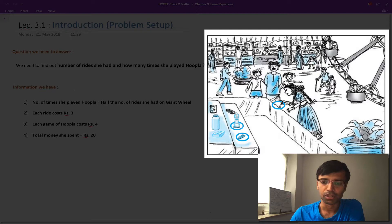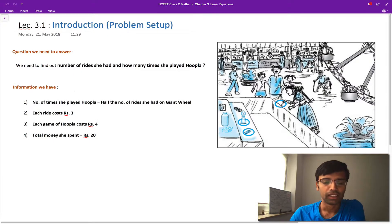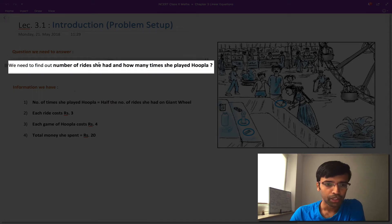Then your dad said, okay, I gave you a total of 20 rupees. Each ride cost 3 rupees and each game of hoopla cost 4 rupees, and you spent all of the 20 rupees. So with all of this information we should be able to figure out how many giant wheel rides you had and how many hoopla games you played. So then you say, let me first just write down what information we have and what question we need to answer. The question we need to answer is: we need to find out the number of rides she had and how many times she played hoopla.